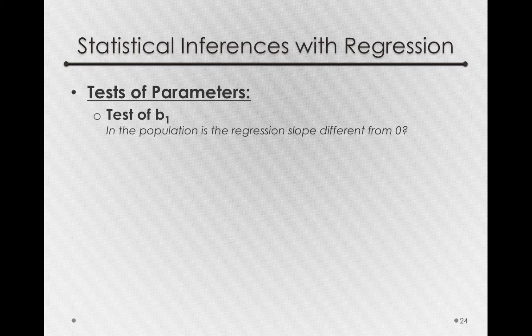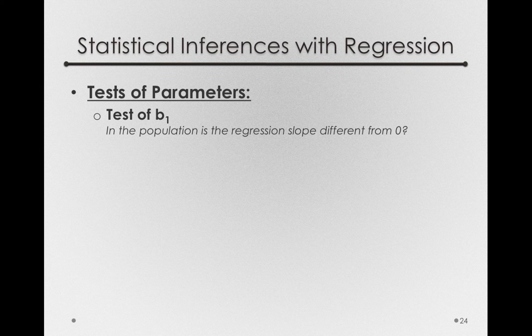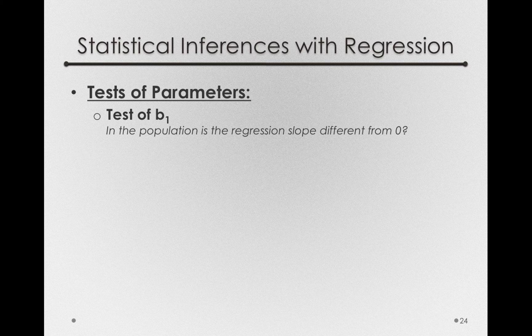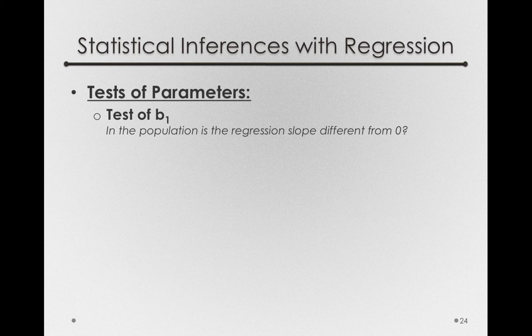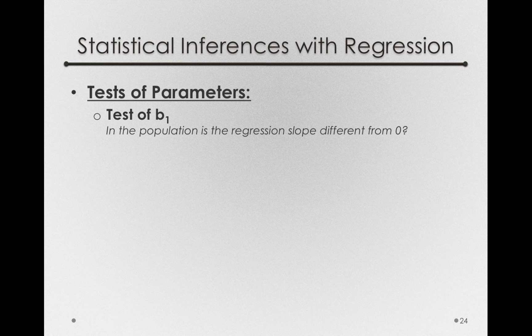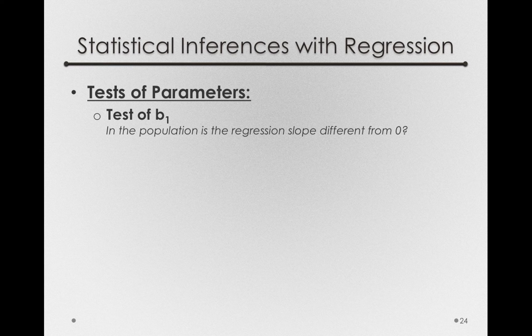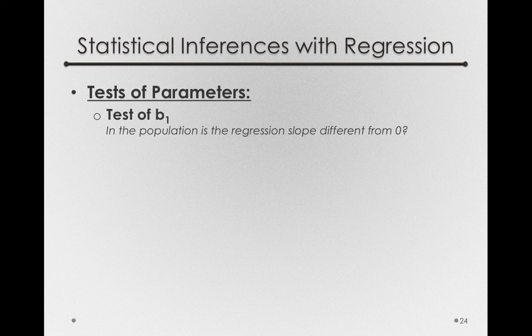Take a second to think about why this is important. In our previous example, we were looking at the regression relationship between score on an exam and the number of hours study. If in the population the regression slope is actually zero, well that would mean that there is no effect of studying on average on the final exam percentages of students. So testing the slope is probably of most interest because it is what is really capturing the effect.